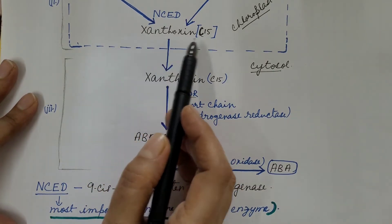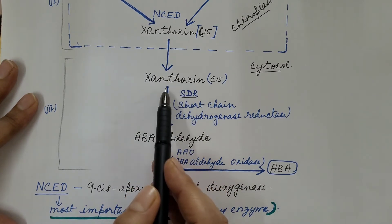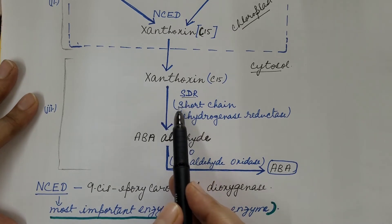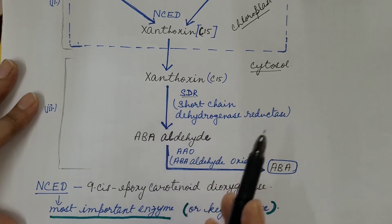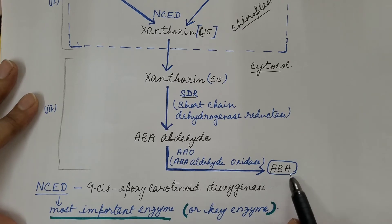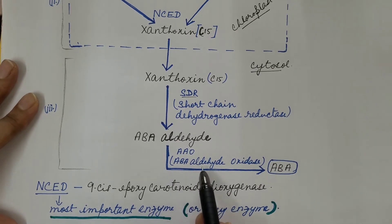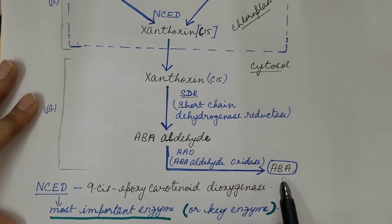Xanthoxin, which is produced in the chloroplast, then enters into the cytosol. Xanthoxin is then converted into abscisic acid aldehyde, catalyzed by the enzyme short-chain dehydrogenase reductase, or in short SDR. Abscisic acid aldehyde is then oxidized to abscisic acid, catalyzed by the enzyme abscisic acid aldehyde oxidase, or AAO. In this way, abscisic acid is synthesized in plants.